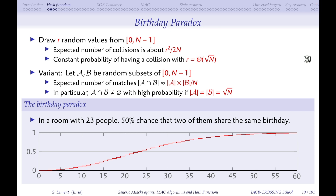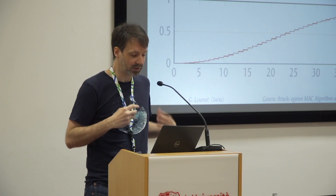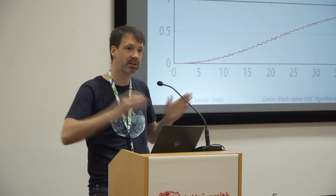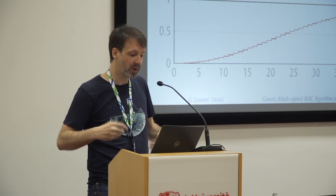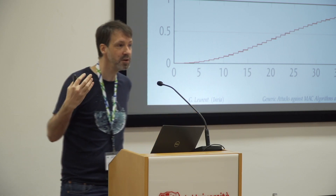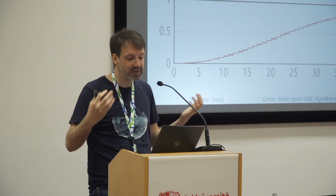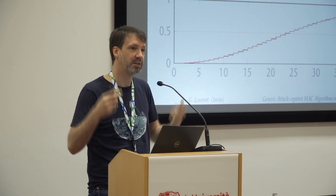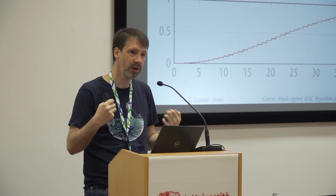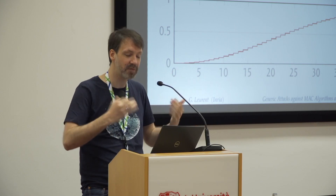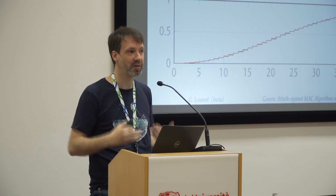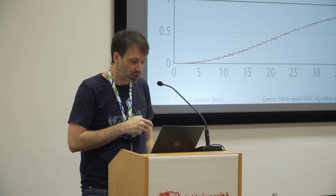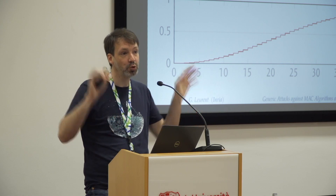One very important notion for hash functions is the birthday paradox. If you draw r values randomly from a set of N values, when r is about the square root of N you expect to find a collision. Intuitively, you can build r-squared pairs, each colliding with probability 1/N. So with r equal to sqrt(N), you have about N pairs and with high probability one will collide.